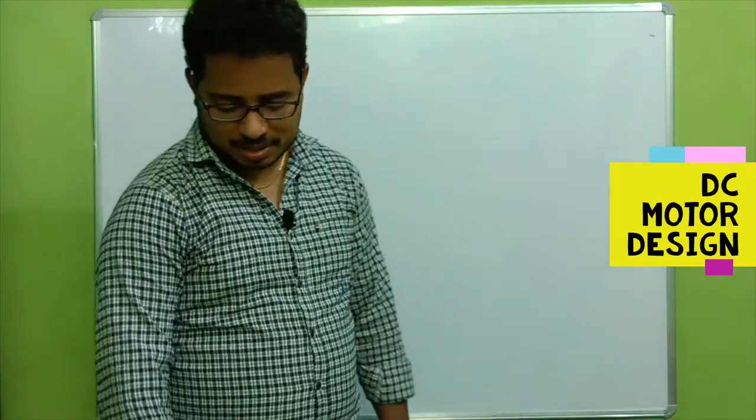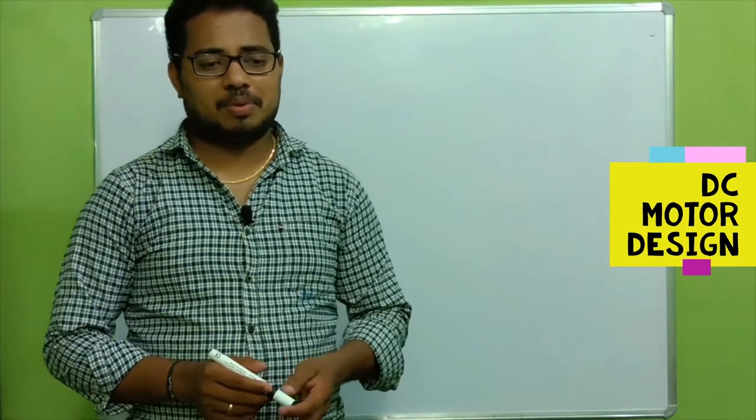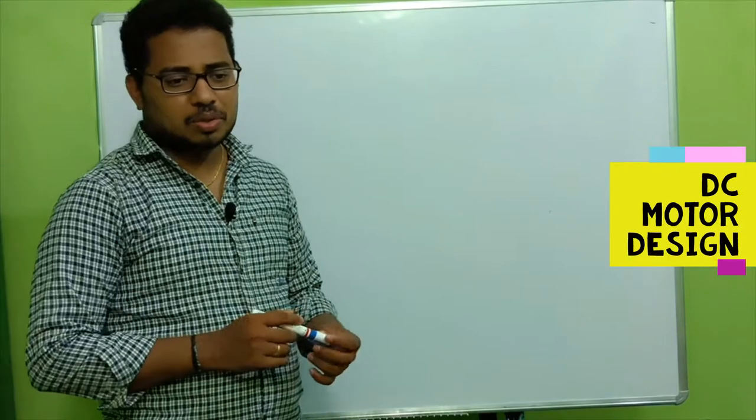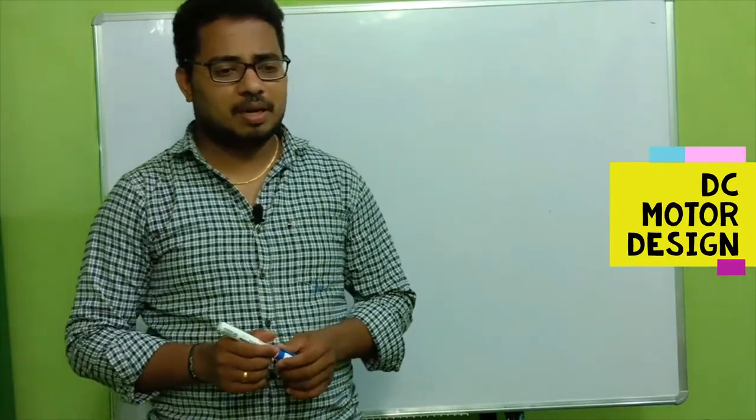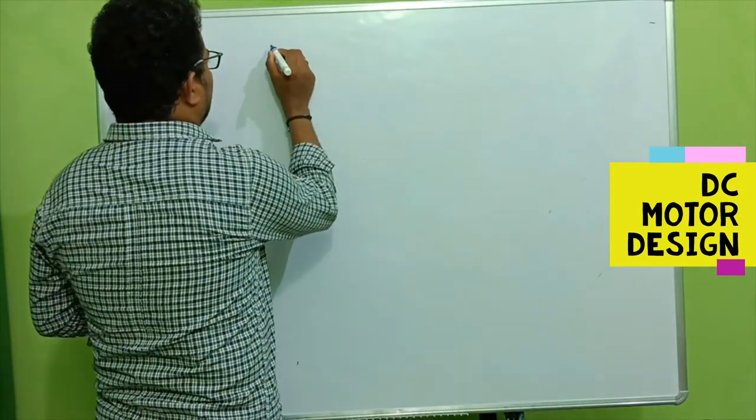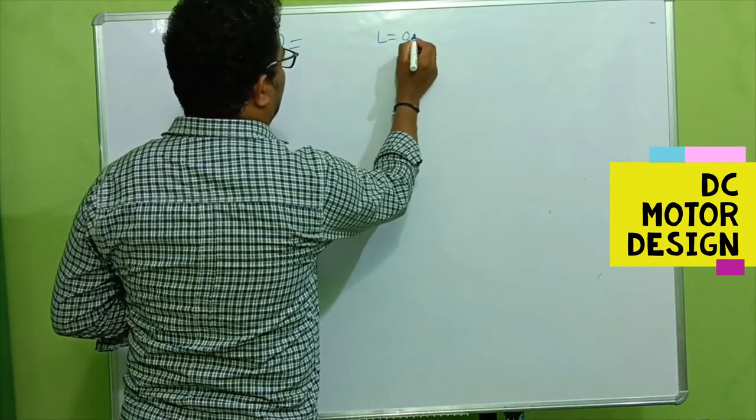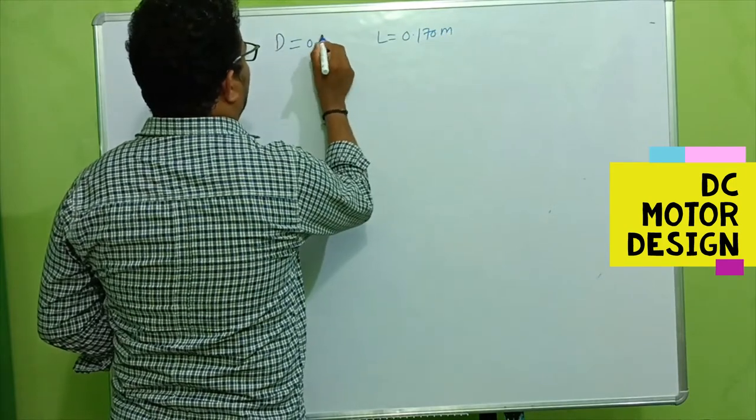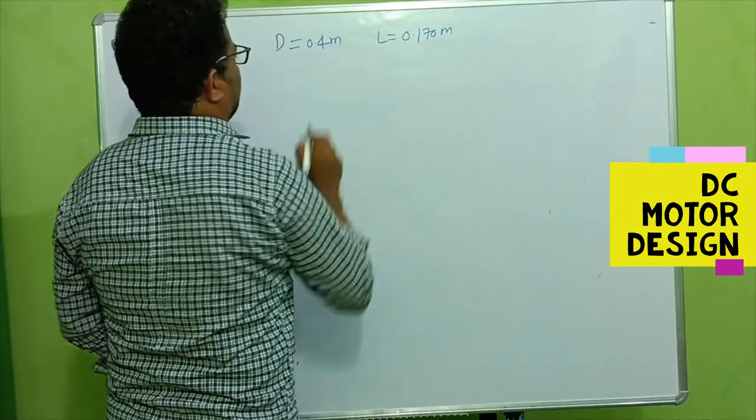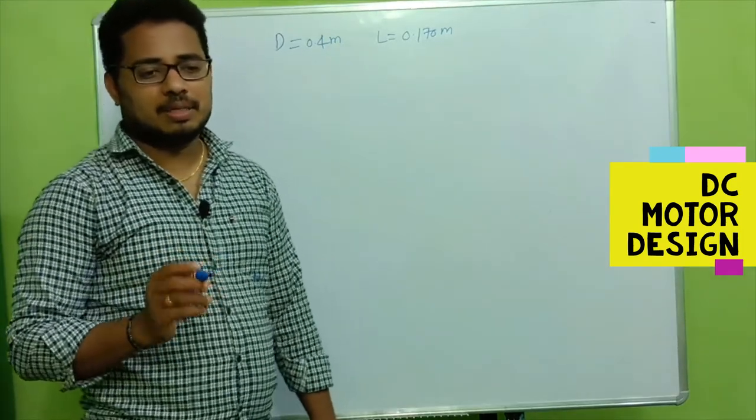Hello friends, good morning and good evening everyone. Today we're going to discuss the remaining portion of this motor design. We're continuing the session from our previous one where we calculated diameter and length. Previously, length was 0.170 meters and diameter was 0.4 meters. These are the main dimensions. Now let's calculate some other parameters.